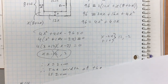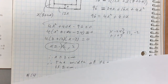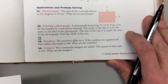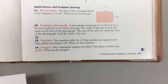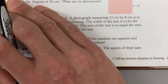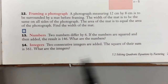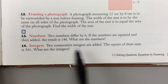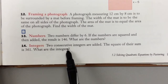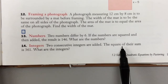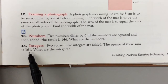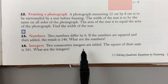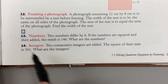The next question is number 14 on the same page. Two consecutive integers are added — consecutive integers means one right after the other. The square of their sum is 361. So if you add the two integers and square that result, you get 361. We need to find what those integers are.